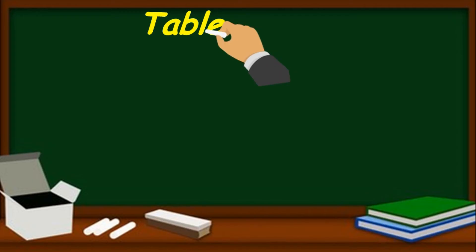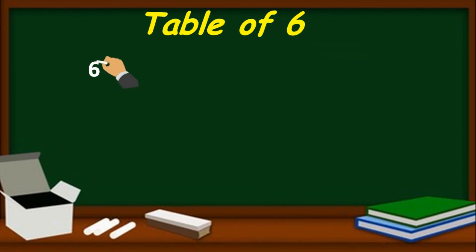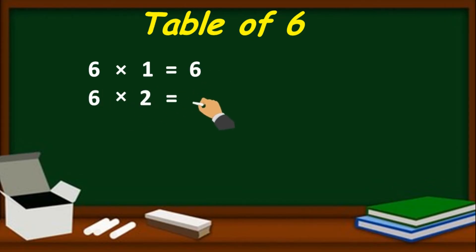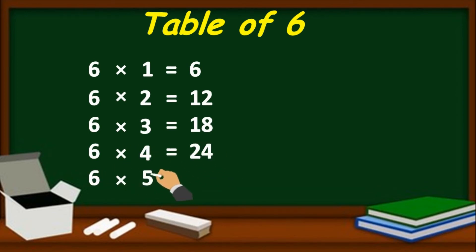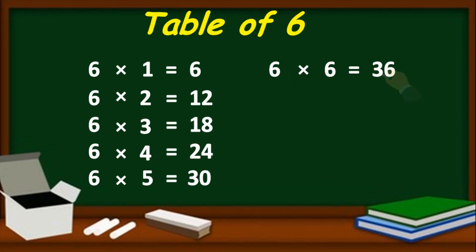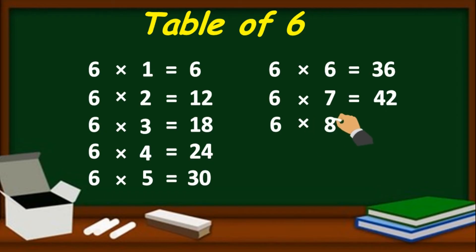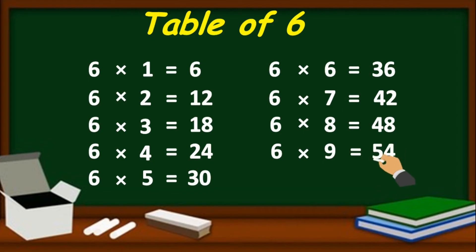Table of 6. 6 one's are 6, 6 two's are 12, 6 three's are 18, 6 four's are 24, 6 five's are 30, 6 six's are 36, 6 seven's are 42, 6 eight's are 48, 6 nine's are 54, 6 ten's are 60.